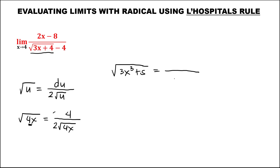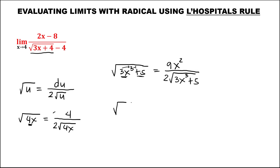If we have the square root of 3x³ plus 5, to find the derivative: for the numerator, the derivative of 3x³ is 9x². Multiply 3 times 3 to get 9, then subtract 1 from the exponent to get x². The derivative of the constant 5 is 0. For the denominator, just add 2 then copy the given: so 2 times √(3x³+5).